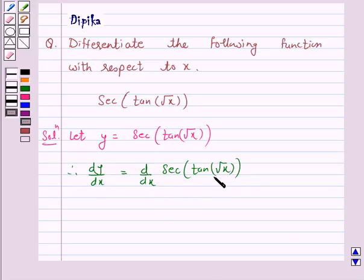Here we will apply the chain rule. Now we know that the derivative of secant theta is secant theta into tan theta. So this equals secant of tan of root x into tan of tan of root x into dy by dx of tan root x.